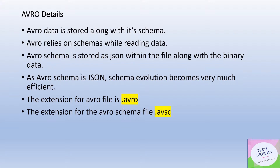Schema evolution is an important factor in the big data world. You may not always know what kind of data will come — data can change dynamically; maybe initially four columns are sent, later five or six. Systems need a mechanism where the schema can evolve by itself. Avro is a perfect example because the schema is in JSON form, making it easy to add or remove fields and adjust to incoming data. The file extension for Avro data files is .avro, and for Avro schema files it is .avsc (Avro Schema).